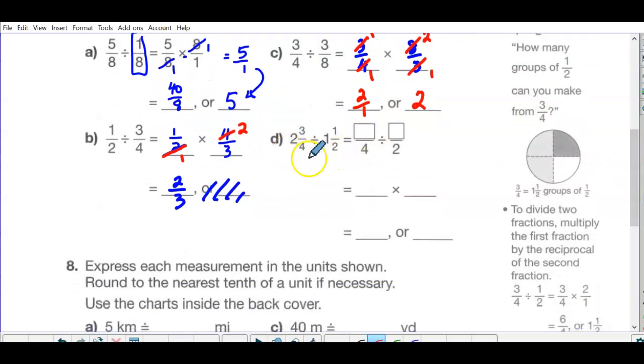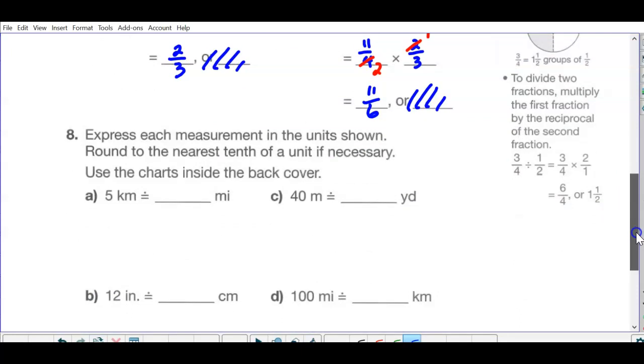And convert to improper fractions. So 8 plus 3 is 11. So 11 over 4 divide by 3 over 2. So that's going to be 11 over 4 times 2 over 3. And again, 2 goes into itself once, into this twice. That's going to be 11 over 6.